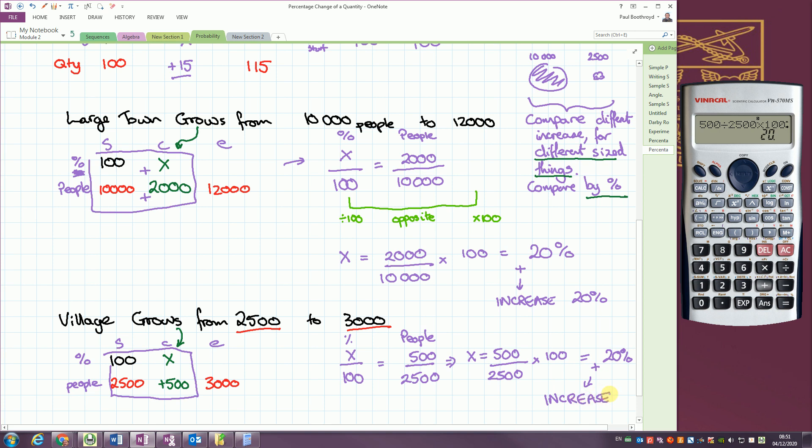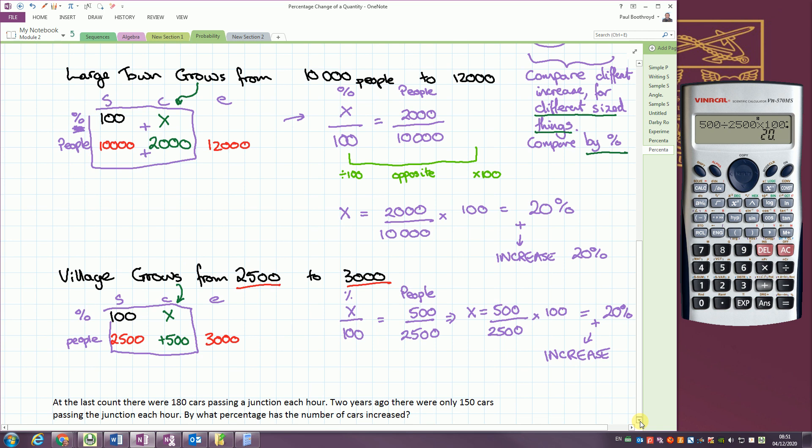What's the conclusion we can make? What conclusion can I say about the growth of these two towns? Are they growing at the same rate? Is one faster? Is one slower? If the percentages are the same, they're growing at the same rate. The populations are getting bigger by the same proportion each time.